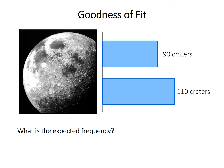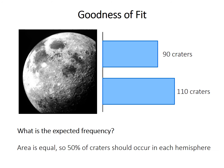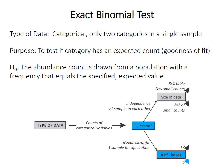At the simplest, the area of each hemisphere is equal — they're each half of the moon — so we might expect that 50% of the craters should occur in each hemisphere. You could have other more sophisticated expectations that take into account the age of the surface in different parts of the moon, but for our purposes, we'll just use this simple one of 50% in each hemisphere.